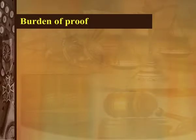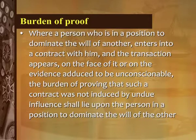In case of inadequacy of consideration, it can be established that the consent was not freely given, though the contract cannot be avoided. Burden of proof: where a person who is in a position to dominate the will of another enters into a contract with him and the transaction appears on its face or on evidence adduced to be unconscionable, the burden of proving that such contract was not induced by undue influence shall lie upon the person in a position to dominate the will of the other.